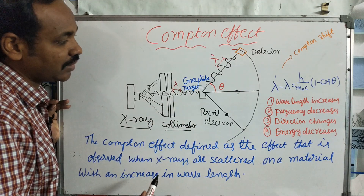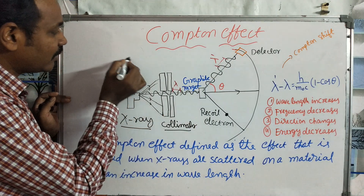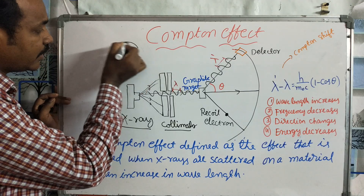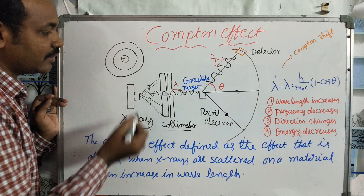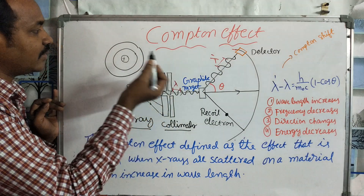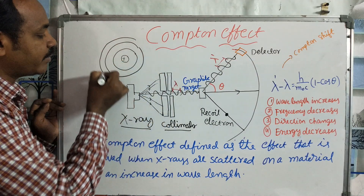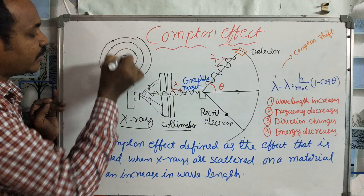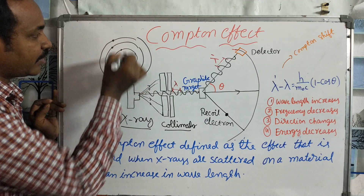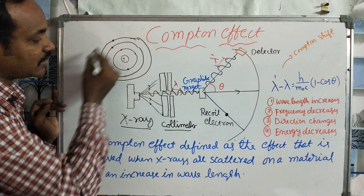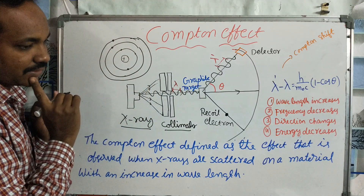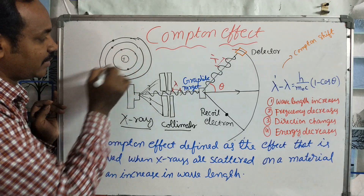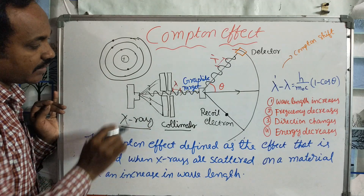At the atomic level, there is a central nucleus, and electrons are present in orbits around it. The number of electrons depends on the element. In graphite, the electrons in the outermost orbit are called valence electrons. These outermost electrons are loosely bonded. Most electrons in the outer orbit are valence electrons, and the radiation interacts with these electrons.